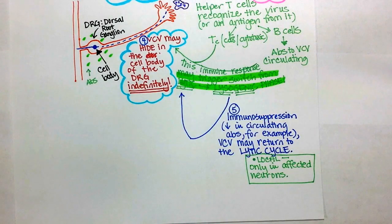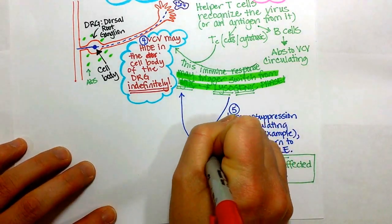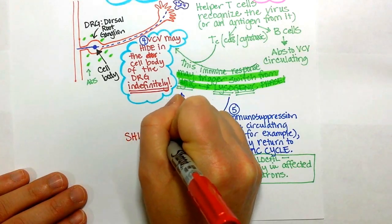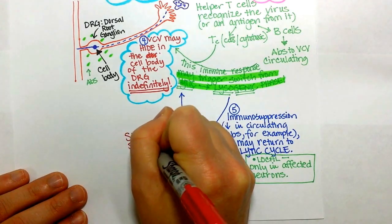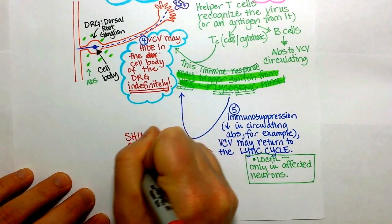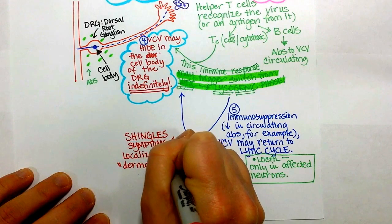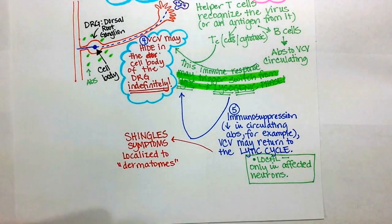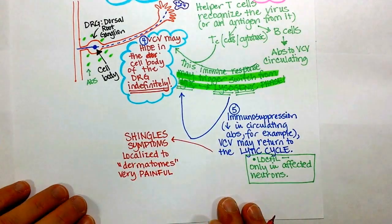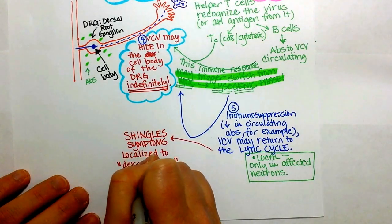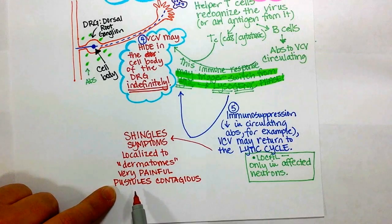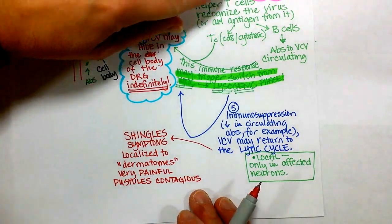The symptoms of shingles — it's the same virus, but a local infection. Shingles symptoms are localized to dermatomes, which are areas of the skin all receiving sensory information from the same nerve. It's notably very painful, more painful than the initial infection of chicken pox was, and the pustules are contagious. But if someone were to contract varicella through a pustule, they would not get shingles — they would get the symptoms of the systemic chicken pox infection.